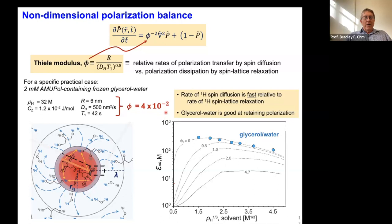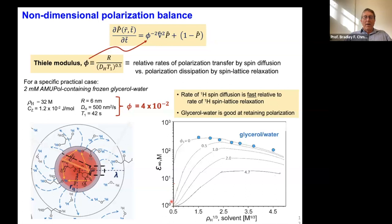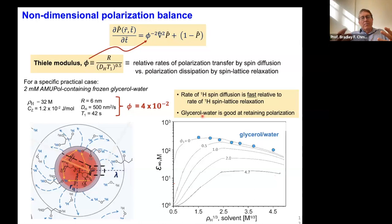That's good — we want the magnetization to propagate. If we look at enhancement as a function of varying ρ_H, assuming propagation in three dimensions and scaling as the cube of the proton spin density, we can adjust with deuteration level. Going from full deuteration to full protonation, you get these curves showing that glycerol-water is very good at retaining polarization. That's why we all use it — Bob Griffin's team developed this excellent formulation, which is actually about the best it can be.